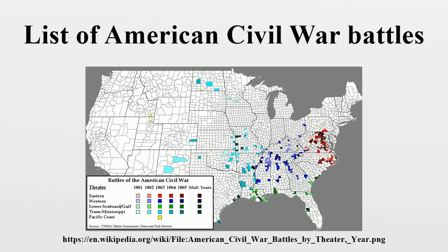Of the Indian Wars between either USA or CSA forces and the Apache, Arapaho, Cheyenne, Comanche, Dakota, Kiowa, Navajo, and Shoshone which occurred during the American Civil War — including the Apache Wars, Colorado War, Dakota War of 1862, and Navajo Wars — troop engagements are also recorded.